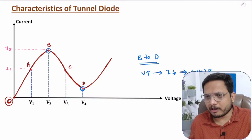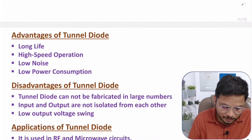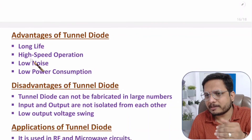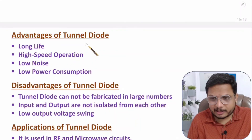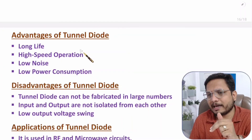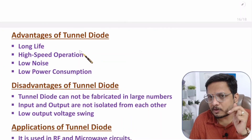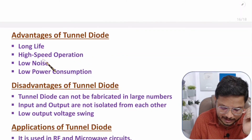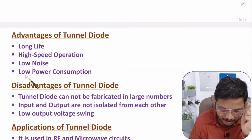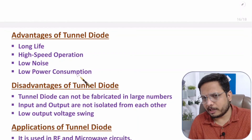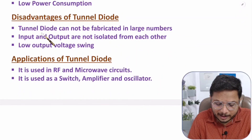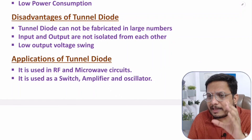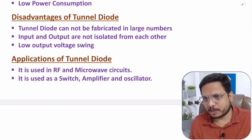Advantages of tunnel diode include: long life, because it operates at lower power only; high speed operation, since in the negative resistance region the reverse recovery time is very less giving very fast switching speed; lower noise; and lower power consumption.